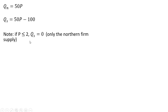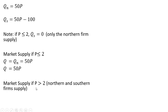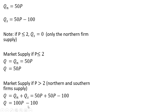Rewriting those equations — one thing to note: if the price is less than or equal to $2, the total quantity supplied in the south by southern firms will be zero. So the market supply when price is less than or equal to $2 consists only of northern firms, which is Q equals 50p. If the price is greater than $2, southern firms will also bring the product to market, so we add the northern and southern market supplies together to get the market supply when price exceeds $2.